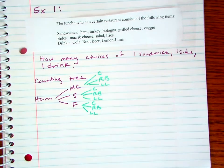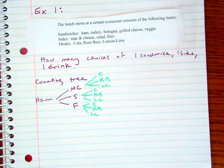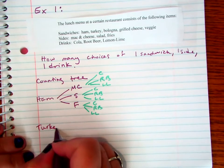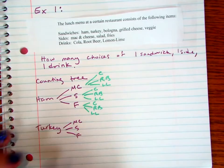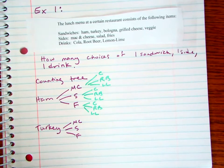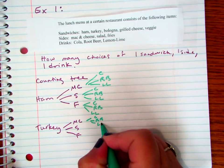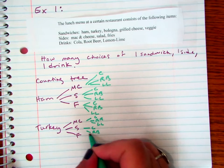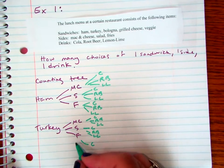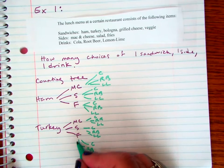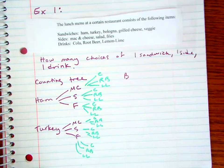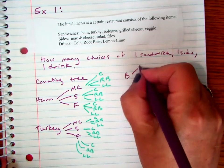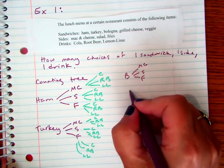Sometimes you see counting trees with a start on the edge — it's completely up to you whether you do that. I don't tend to do that. I tend to start with just the original option. So I might say ham, and then with ham I could either choose mac and cheese, salad, or fries. And then with those I could then choose — I'll change the color just to show you. With ham and mac and cheese, I could also choose cola, root beer, or lemon lime.